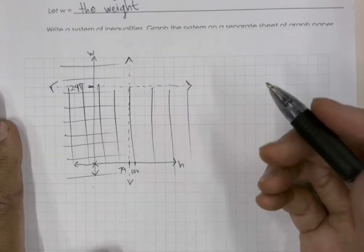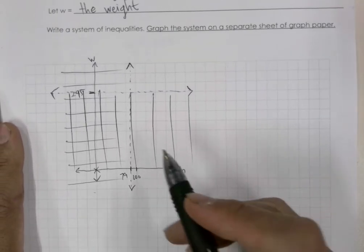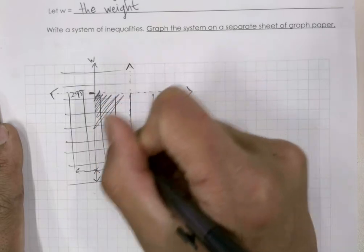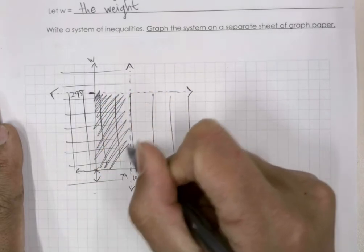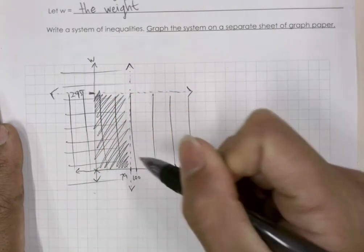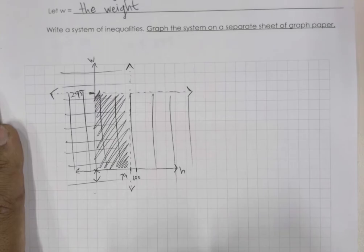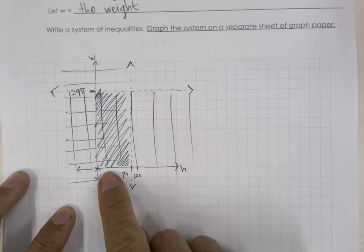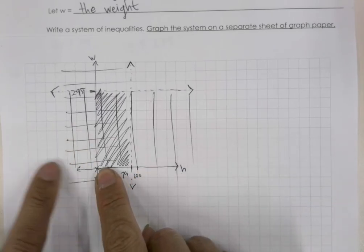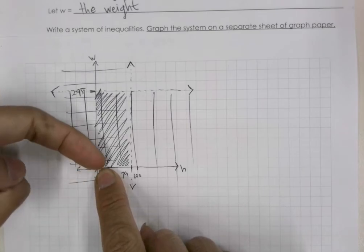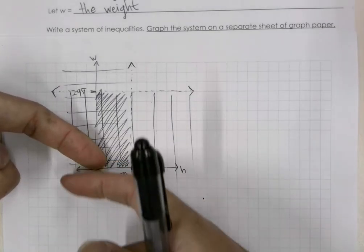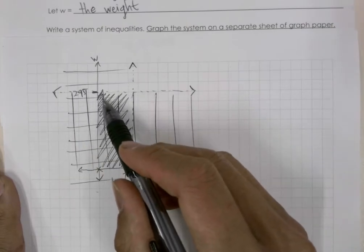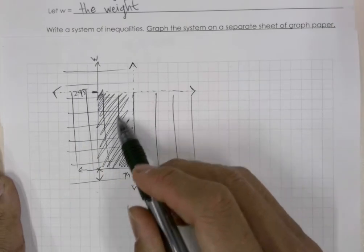The solution to the problem is the overlapping shaded area. It's that region because it's the overlap of both inequalities. Additionally, it's impossible to have a negative height, and it's also impossible to have a negative weight — so the solution region is only this box in the first quadrant.